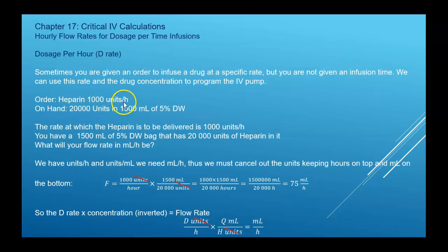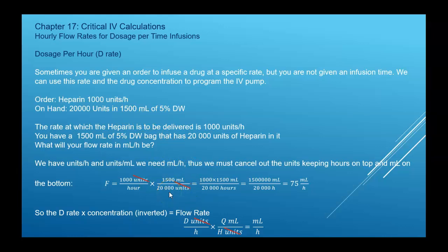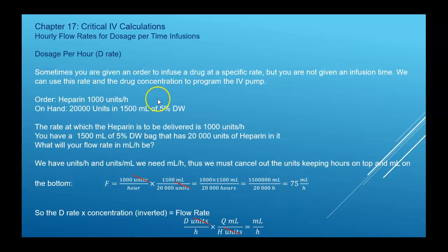Your D rate is 1,000 units per hour — hours on the bottom, so that ratio is fine. On hand you have 20,000 units in 1,500 milliliters. Since we want milliliters per hour, we write the concentration as 1,500 milliliters over 20,000 units. Using dimensional analysis, we cross out units, multiply across the top and bottom, reduce the fraction, and get a flow rate of 75 milliliters per hour.